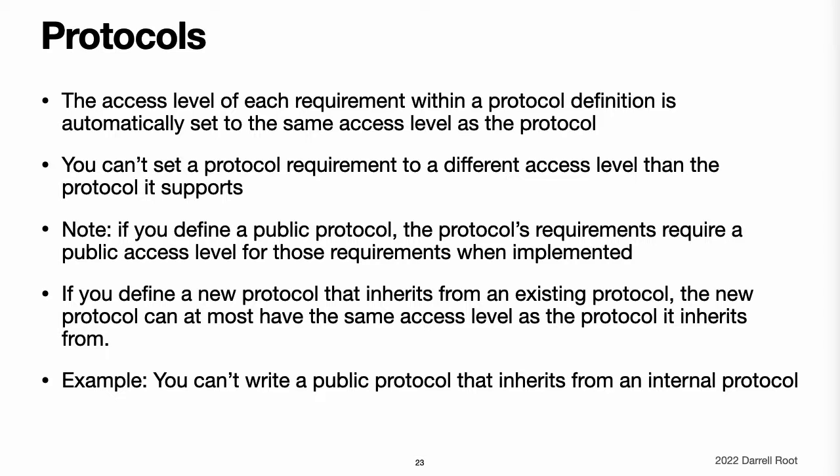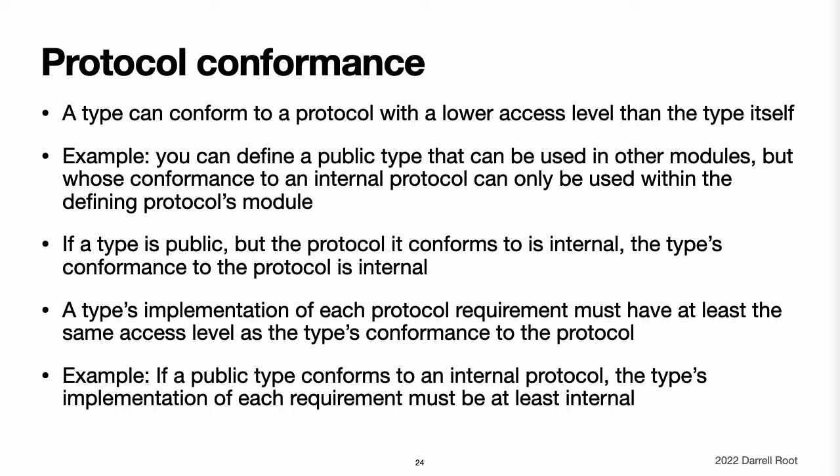Protocol inheritance. If you define a new protocol that inherits from an existing protocol, the new protocol can at most have the same access level as the protocol it inherits from. For example, you cannot write a public protocol that inherits from an internal protocol. Protocol conformance. A type can conform to a protocol with a lower access level than the type itself. For example, you can define a public type that can be used in other modules, but whose conformance to an internal protocol can only be used from within the internal protocol's defining module. The context in which a type conforms to a particular protocol is the minimum of the type's access level and the protocol's access level. For example, if a type is public, but a protocol it conforms to is internal, the type's conformance to that protocol is also internal.